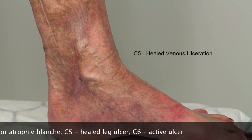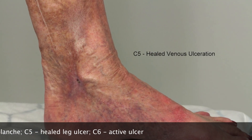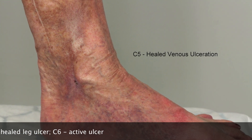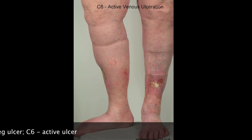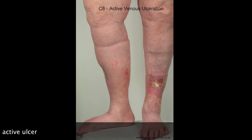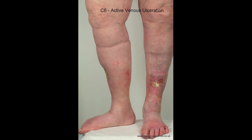C5 is the presence of a healed venous ulcer. C6 is the most severe form of venous disease — an active ulcer. So there you have the clinical classification of lower limb venous disease from C1 to C6.